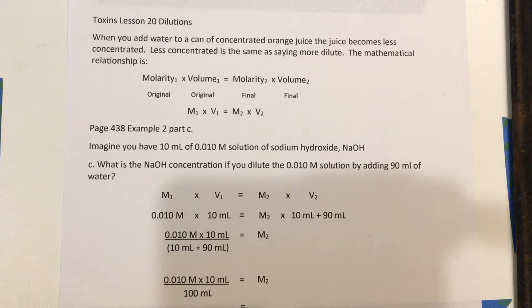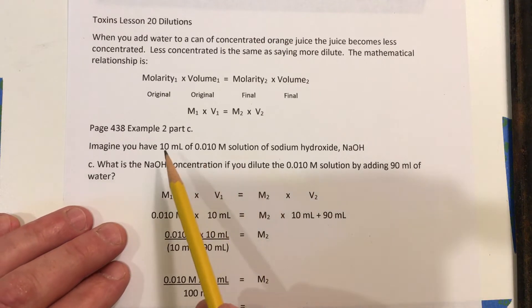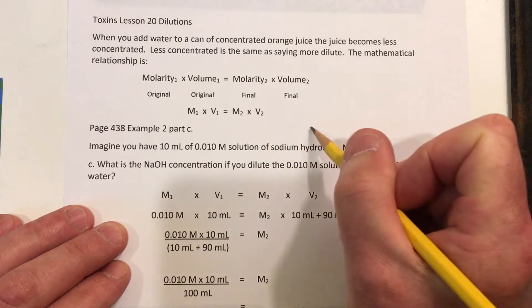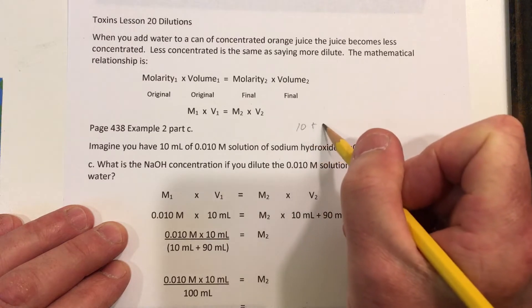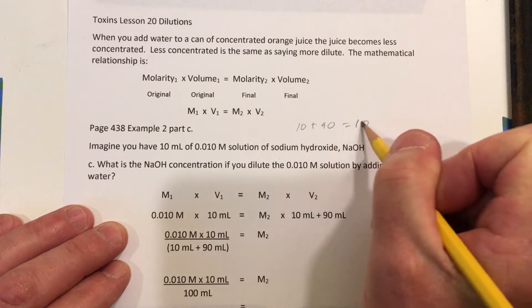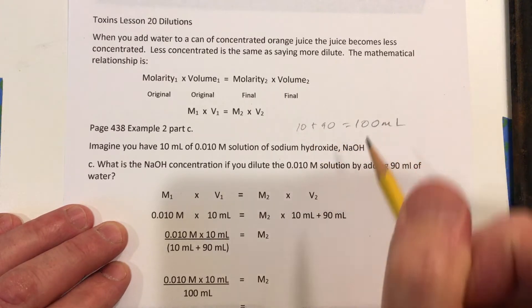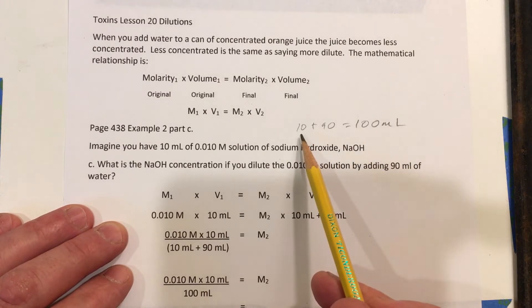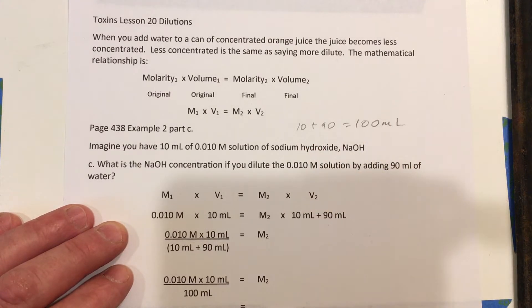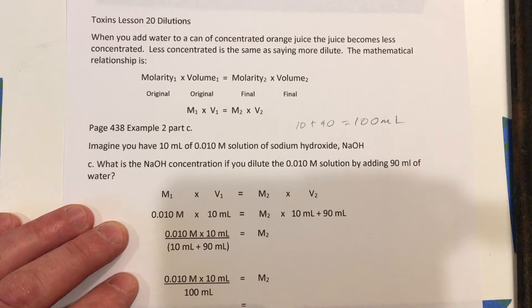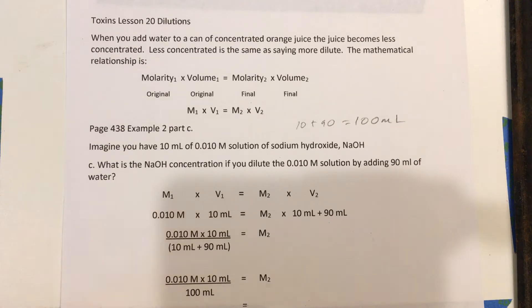One is just sort of a thought experiment. If you add 90 to 10, so you take the original 10 and you add 90 to it, you now have 100 milliliters. And that's 10 times this volume. So if the volume is 10 times, you would expect the concentration to be 1 tenth of what you started with. Those numbers are easy to work with, so maybe it's easy to see that.